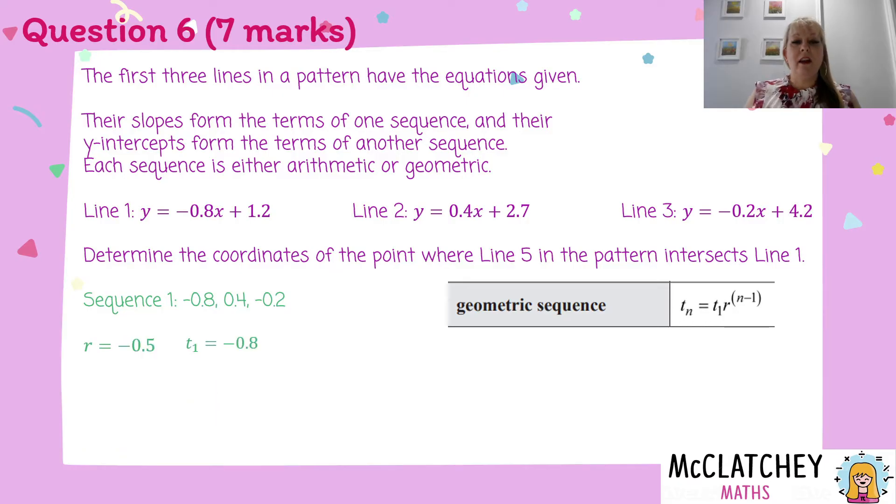So I've now found my common ratio for my first sequence. Now I need to work out what term 1 is, and then I'm going to come up with something for this. So I've got term 1 from that sequence is negative 0.8, and if I put that into the geometric sequence, this basic form, I'm going to end up with this little formula here, negative 0.8 times minus 0.5 to the power of n minus 1.